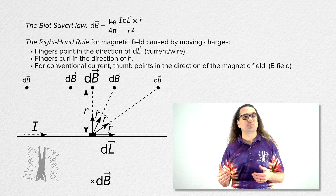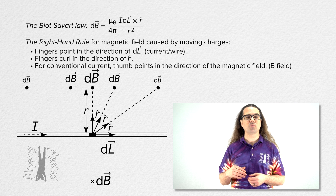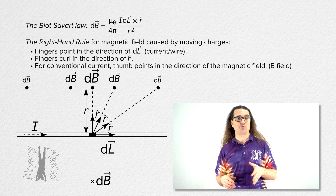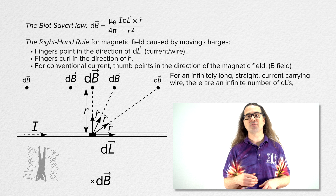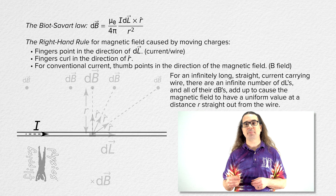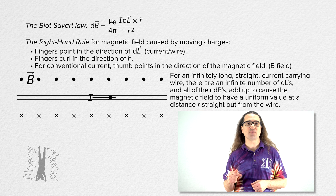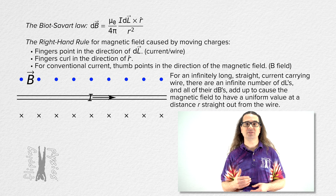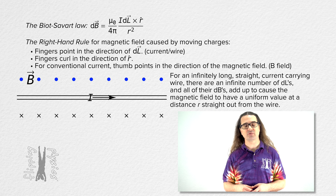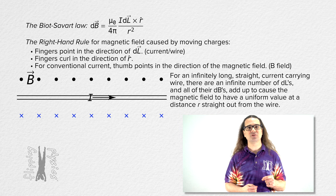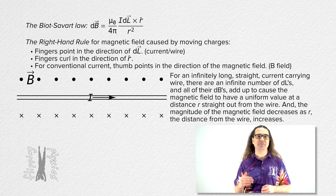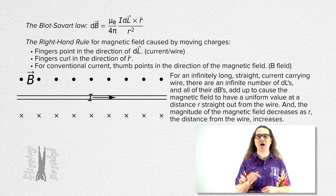It is important to realize this is for an infinitesimally small portion of the wire dL. However, for an infinitely long straight current-carrying wire, there are an infinite number of infinitesimally small portions dL, and all of their magnetic fields add up to cause the magnetic field to have a uniform value at a distance r straight out from the wire. We have shown that above and parallel to the wire there exists a uniform magnetic field which is out of the screen, and below and parallel to the wire there exists a uniform magnetic field which is into the screen. The magnitude of the magnetic field created by an infinitely long straight current-carrying wire also decreases as the distance r from the wire increases.